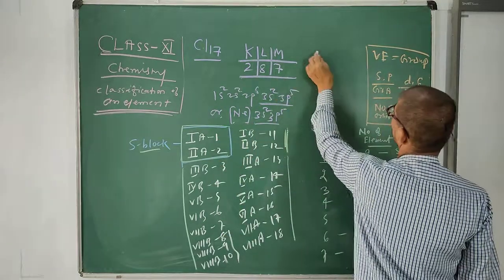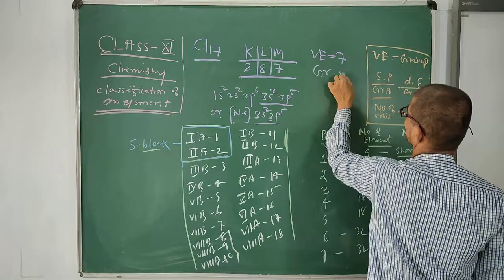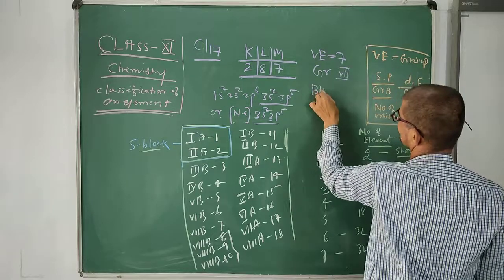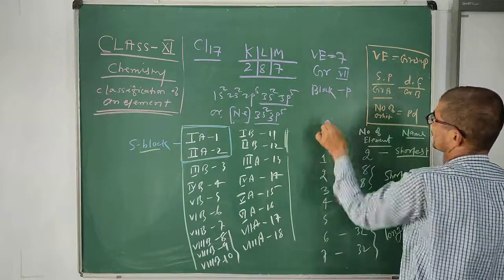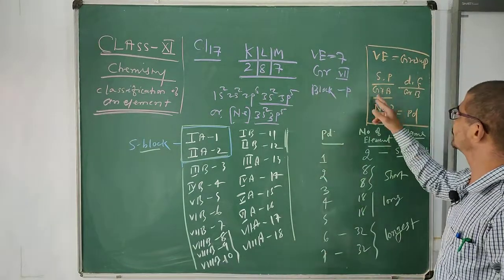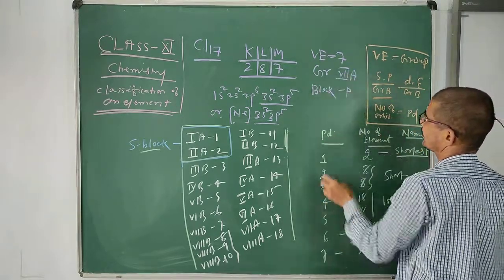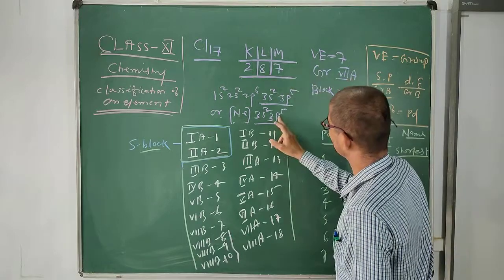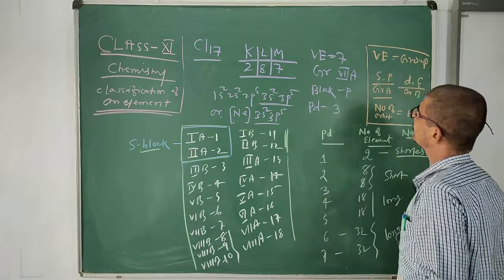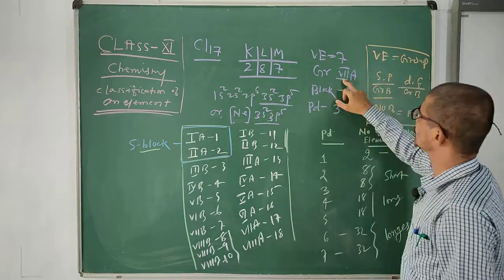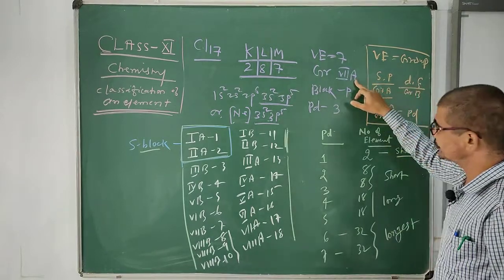Now, the valence electron is 7. So the group is 7 in Roman numerals. Block: the last electron enters the P orbital, so the block is P. Since block is P, it belongs to subgroup A. The number of orbits is 3, so the period is 3. So chlorine is placed in group 7, block P, and period 3 in the periodic table. And group 7 is also called group 17.